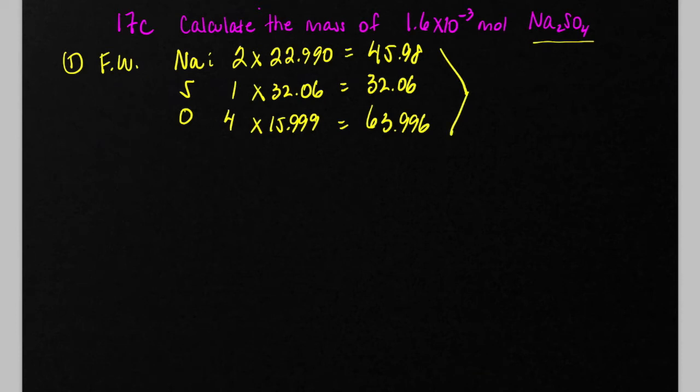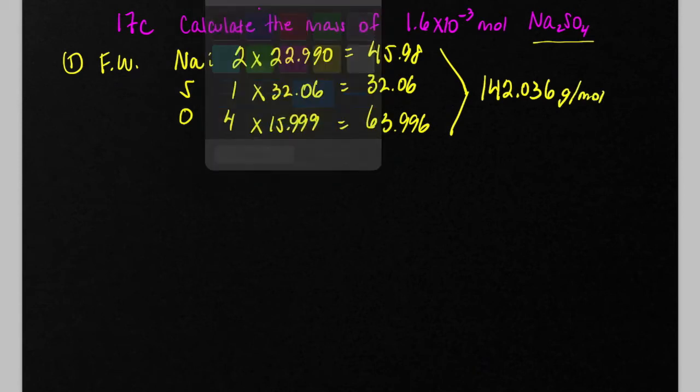Now we add up the contribution of weights from each of those. So add those three numbers up to get the grand total. And this is the formula weight or molar mass of the substance in units of grams per mole.